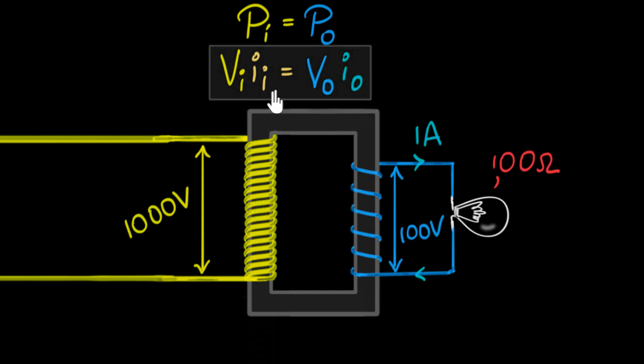Now instead of substituting, let's do this logically. It's saying that the product of the voltage and the current must be the same on both sides. Now because the voltage here is 10 times more than the voltage over here, this means that the current over here must be 10 times less than the current over here. Only then the product will be the same. Therefore the current will be 0.1 ampere.